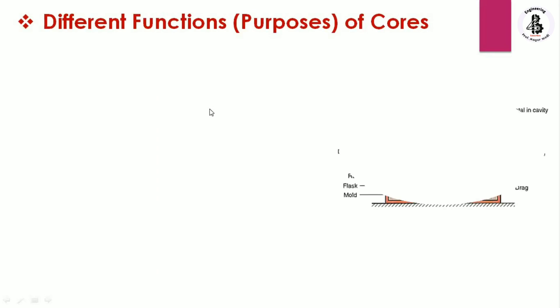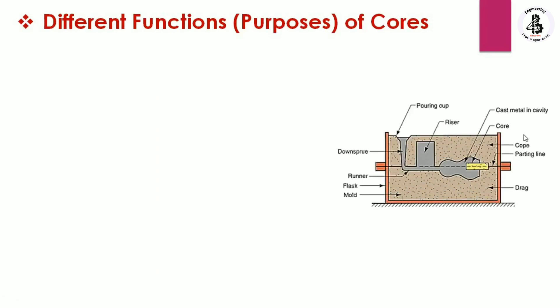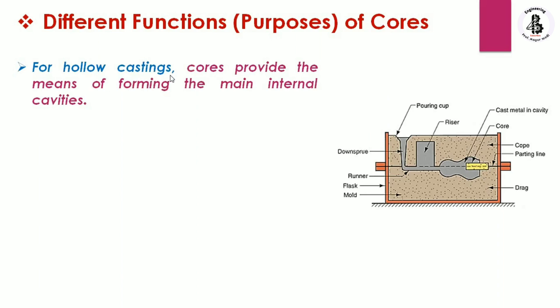Now let us see the different functions or purposes of cores. This figure shows the basic arrangement of the core in the cavity in a horizontal position. Depending on the requirements of shape and size of the cast product, cores can be in horizontal, vertical, or sometimes overhanging positions — depending on the complexity and shape of the cast product.